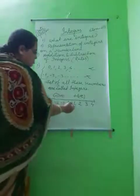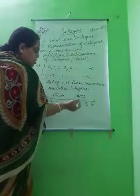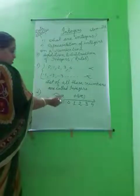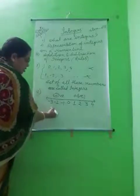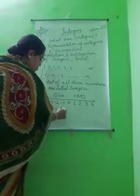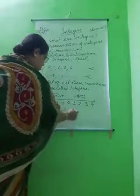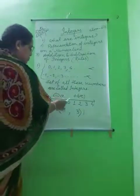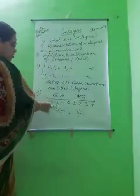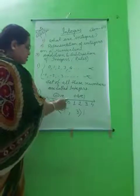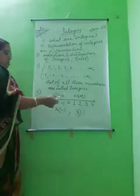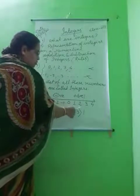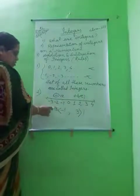As we move from 0 to the right, the values of the numbers are increased. And from 0 to the left, the values of the numbers are decreased. That means minus 3 is less than minus 1. But on the positive side, we know 3 is greater than 1. So minus 1 is greater than minus 2 and minus 3.